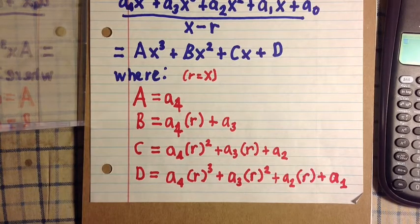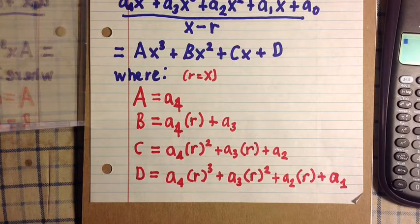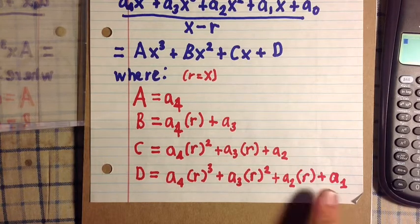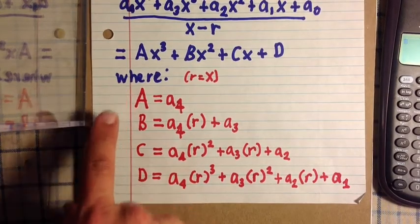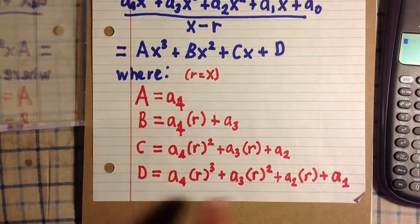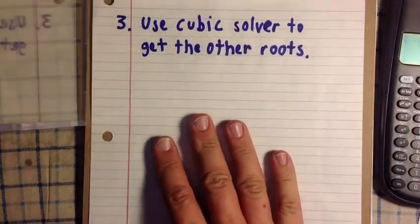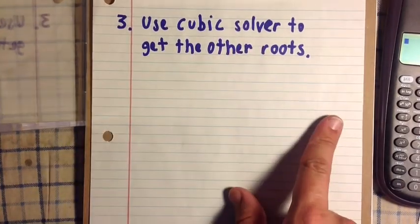And capital D has additional terms with R. Once we get capital A, B, C, and D, we then can use the polynomial feature on the TI-36X Pro to get the other roots.